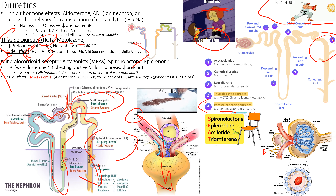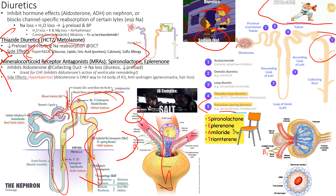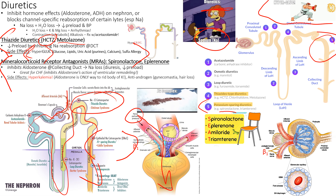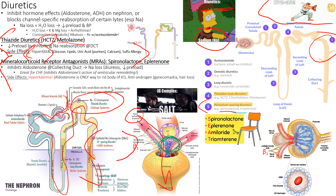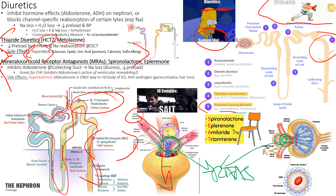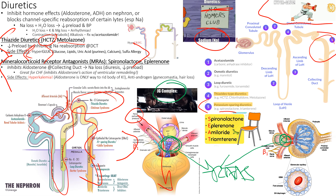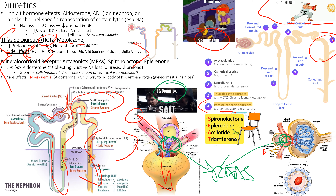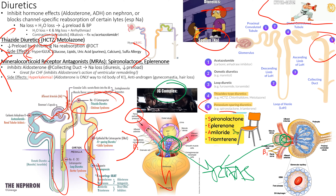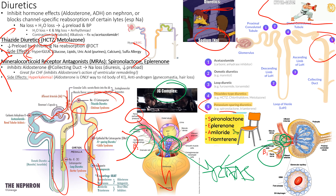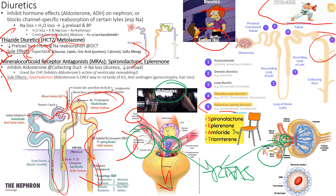The juxtaglomerular complex tastes the urine at all times — if sodium is low or pressure is inadequate, it triggers the RAS system to reabsorb more salt and water. Beta-1 receptors at the JG complex connect the SNS to the RAS: SNS signals trigger the RAS, and when we give a beta-1 blocker, it also inhibits the RAS system, providing double duty.